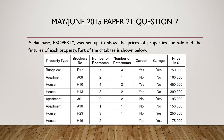So we have the field names: property type, brochure number, number of bedrooms, number of bathrooms, garden, garage, and price in dollar. All of these are the field names, and we have a list of rows which corresponds to the number of records.